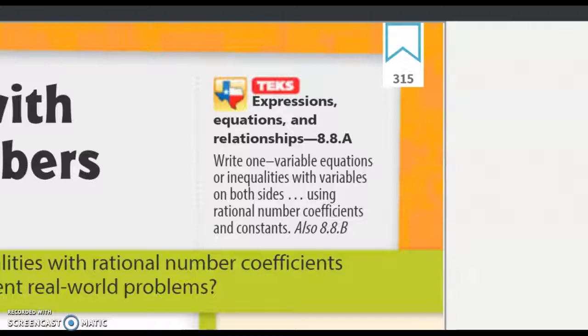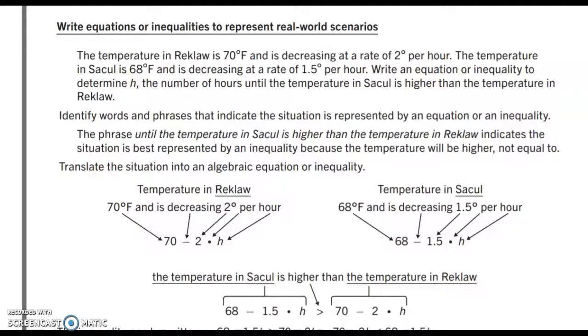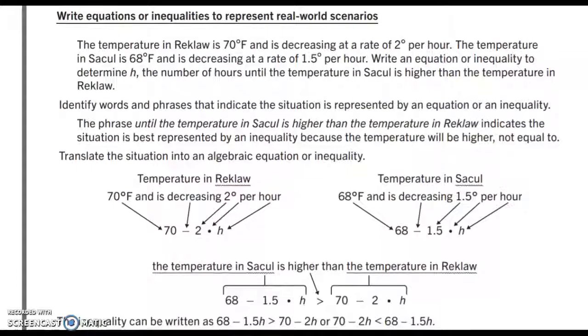If we take a look at this particular example, we show that the temperature in a city named Reclaw is going to be 70 degrees Fahrenheit and is decreasing at a rate of 2 degrees per hour. The temperature in Sacul is going to be 68 degrees Fahrenheit and decreasing at a rate of 1.5 degrees per hour.